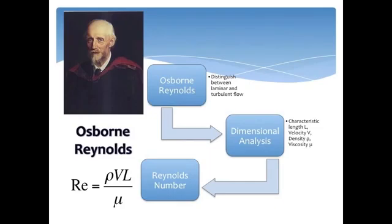Osborne Reynolds was the first person to demonstrate that a combination of variables could be used to distinguish flow into two types: laminar and turbulent.